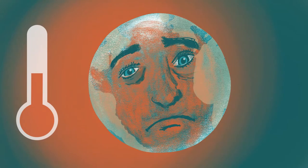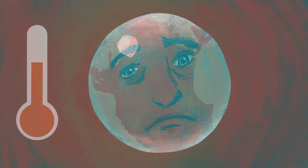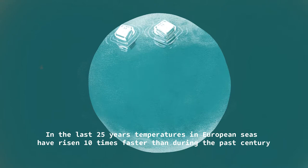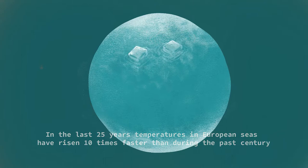Global sea surface temperature is 1 degree Celsius higher than a century ago. And in the last 25 years, temperatures in European seas have risen 10 times faster than during the past century.